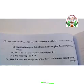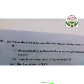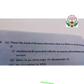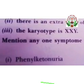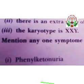First, you have to understand the question. You have to write the name of the disease or disorder that occurs if a mutation in the gene that codes for the enzyme phenylalanine hydroxylase occurs. The answer will be phenylketonuria. We learnt about phenylketonuria.